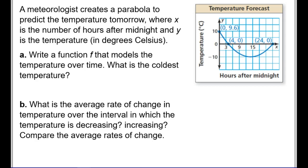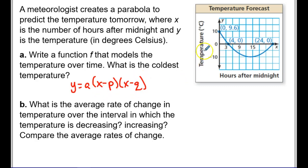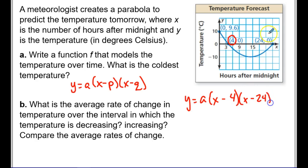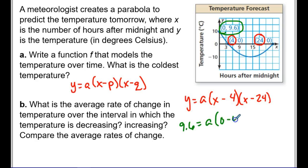Now let's look at when we're not given the vertex. Since we're given the two x-intercepts instead, we'll use intercept form: y = a(x − p)(x − q), where p and q are the intercepts. Plugging in the intercepts, the equation becomes y = a(x − 4)(x − 24). Just like before, I need an additional point's x and y values. I plug in y = 9.6 and x = 0.